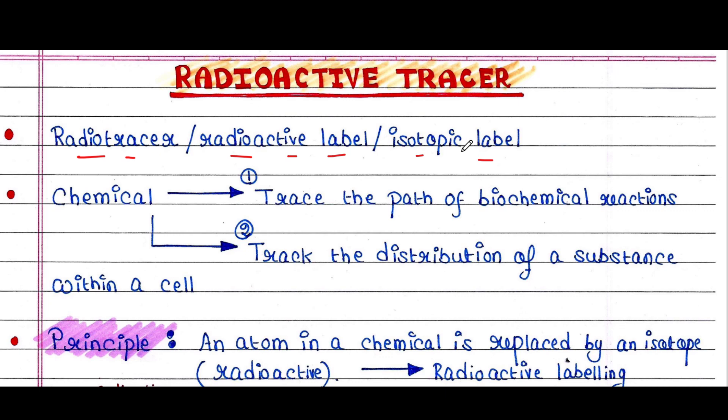Basically, it is a chemical compound which is used in two ways. One, to trace the path of biochemical reactions. Two, to track the distribution of a substance within a cell.